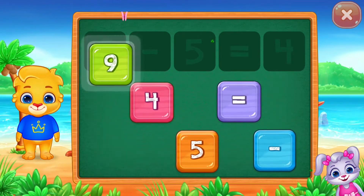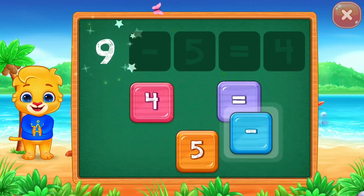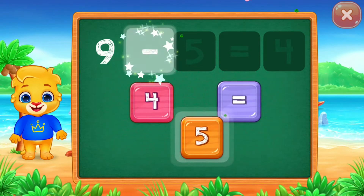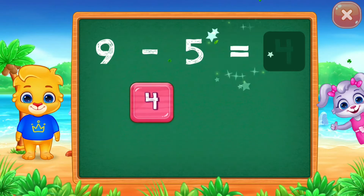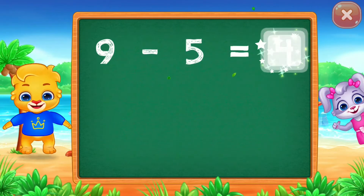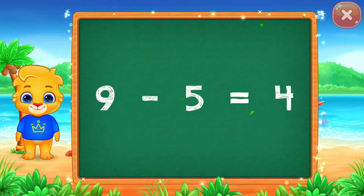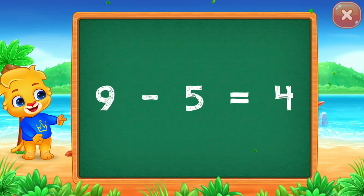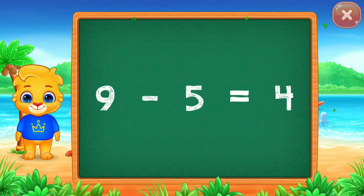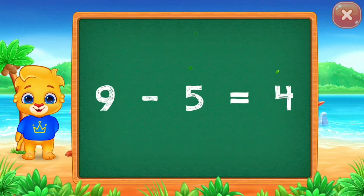Nine minus five equals four. Good job! Nine minus five equals four.